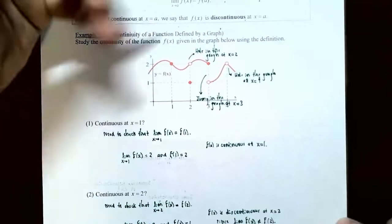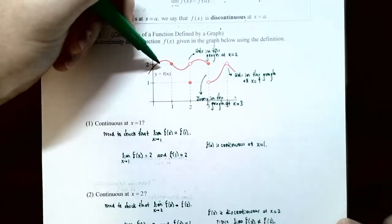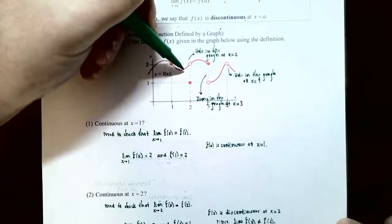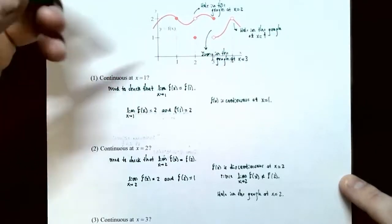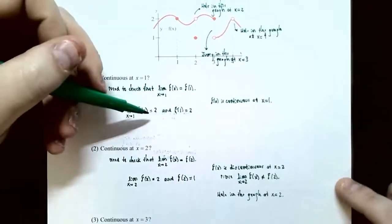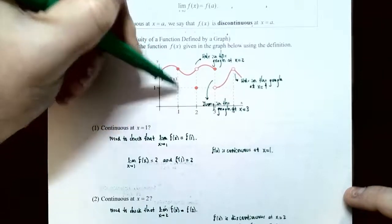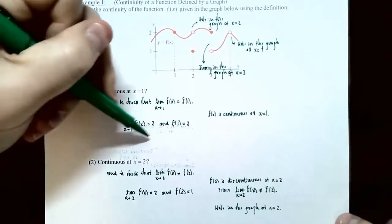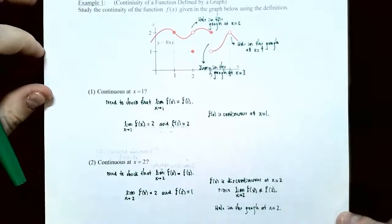Now we check the second condition: does the limit equal the y value at x equals one? Looking at the graph, the point at x equals one is defined at a filled-in point where y equals two. So f of one equals two. The limit is two and the y value is two — the definition of continuity is satisfied. Therefore f of x is continuous at x equals one.